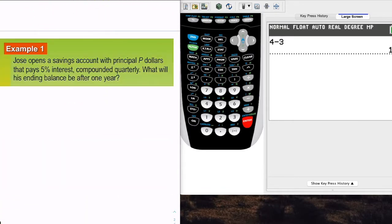Now, in Example 1, Jose opens a savings account with principal P dollars that pays 5% interest, compounded quarterly. What will his ending balance be after one year? Well, we have some information, but we're only told that we have P dollars as an initial investment. So what we're going to do is talk about this on a quarterly basis.